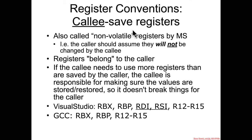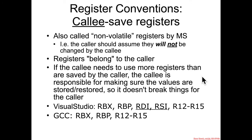The callee-saved registers, also called non-volatile registers, are ones where the caller should assume they will not be changed by the callee. If the callee does change them, it's misbehaving and could lead to broken code. These are registers that belong to the caller, and therefore the callee needs to save and restore them so it doesn't break anything in the caller.